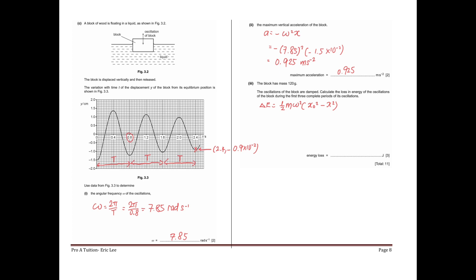So x-naught is negative 1.5 cm and x is negative 0.9 cm. Substituting: one half times mass 120 times 10 to the minus 3, times omega squared (7.85 squared), times (negative 1.5 times 10 to the minus 2 all squared, minus negative 0.9 times 10 to the minus 2 all squared). The result is 5.32 times 10 to the minus 4 joules — that is the energy loss.